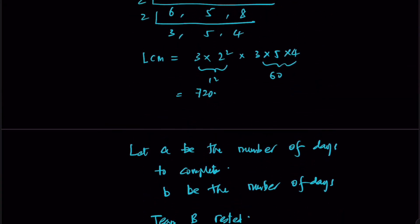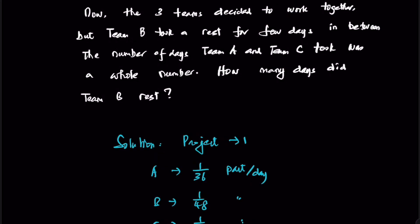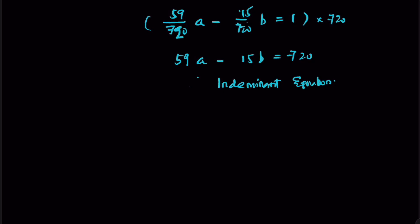The question says the number of days Team A and Team C took was a whole number — in other words, an integer. Since A and B are whole numbers, we make an intelligent guess: A = 15, and B = 11. So Team B rested 11 days.